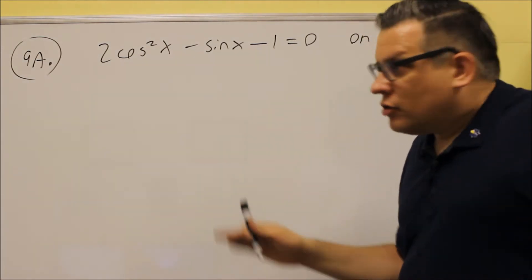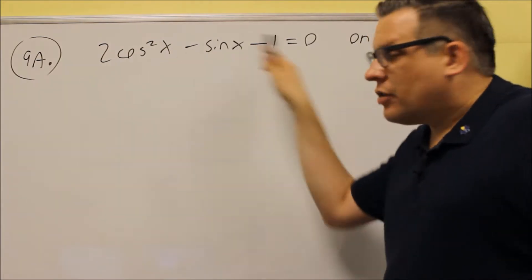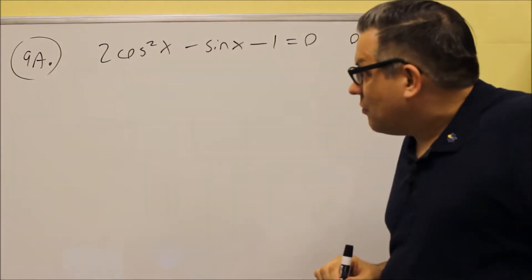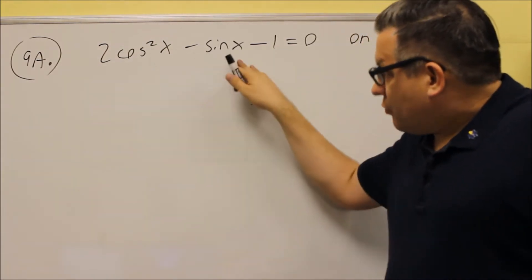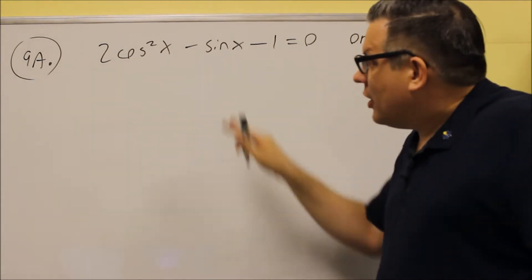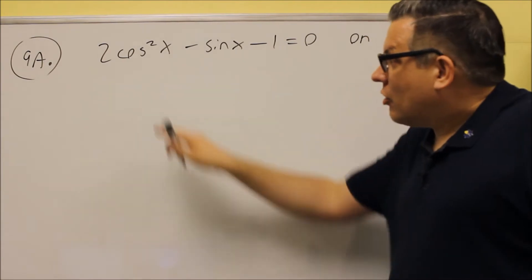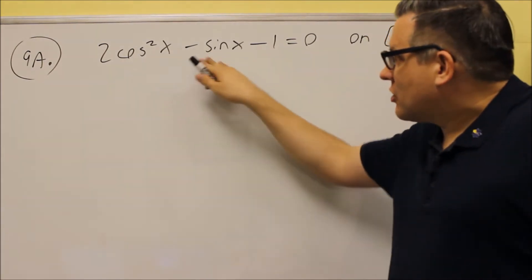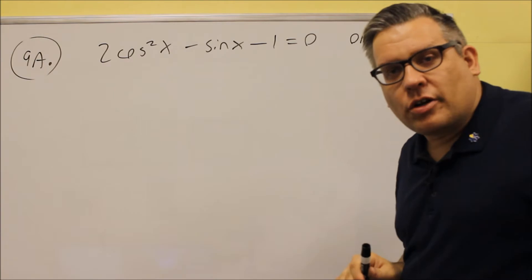So what we're going to try and do is get all these to be the same trig function, particularly we'll probably make them all sines, and that way we can factor something and get it to work this way. I need to get rid of the cosine and make it into a sine because I already have a sine right here.